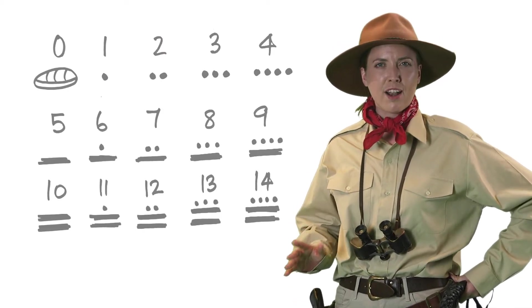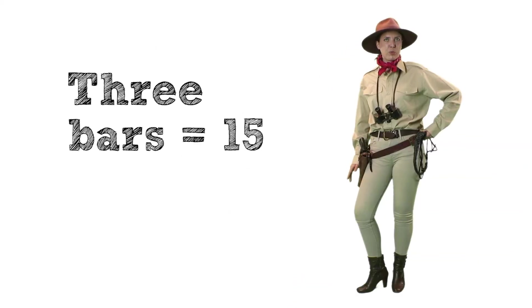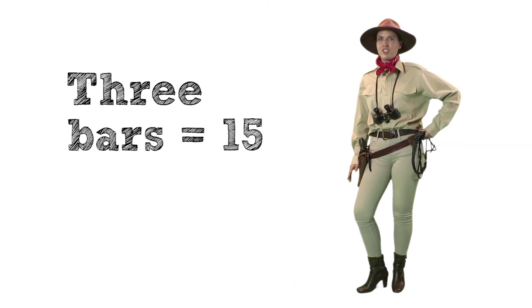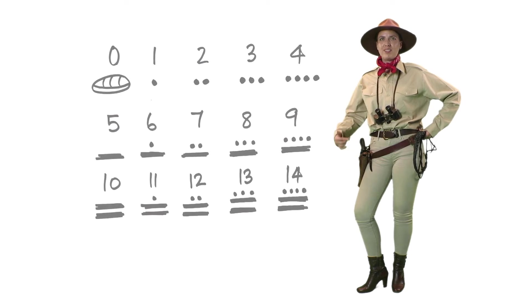But to write 10, you simply add another bar. So if you had three bars, that would be 15. But if you'd add just one dot, that would be 16.